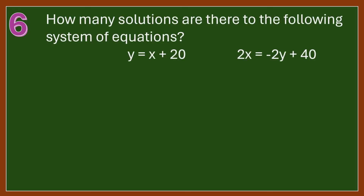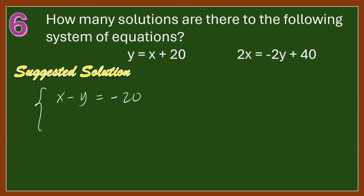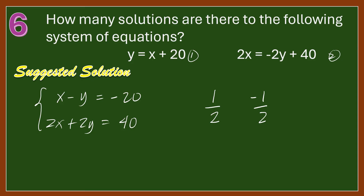Number 6: How many solutions are there to the following system of equations? We rewrite the two equations in standard form. Equation 1 becomes x minus y equals negative 20, and Equation 2 becomes 2x plus 2y equals 40. The ratio of the coefficients of x is 1/2, and for y it is negative 1/2. Since these ratios are not equal, there is exactly one solution to this system.